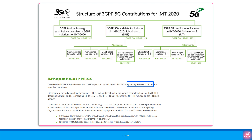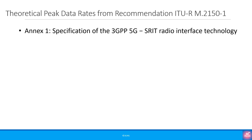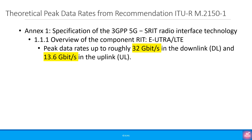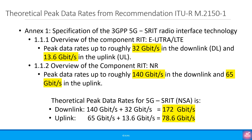Just to note, the IMT 2020 submission was based on 3GPP Release 15 and Release 16 standards. You can see the references to the documents for anyone interested in digging further. Let's look at the theoretical peak data rates from ITUR Recommendation M.2150-1. For the non-standalone specifications, the peak data rates for the LTE part is a maximum of 32 Gbps in the downlink and 13.6 Gbps in the uplink. The peak data rates for the 5G NR part is a maximum of 140 Gbps in the downlink and 65 Gbps in the uplink. This gives us a theoretical peak data rate of 172 Gbps in downlink and 78.6 Gbps in uplink.